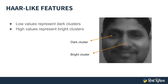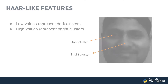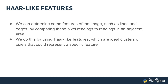If a specific sub-region's pixels add up to a low number, it's a dark sub-region. If it's a high number, it's bright. We can determine some features of the images, such as lines and edges, by comparing these pixel readings to readings in an adjacent area.